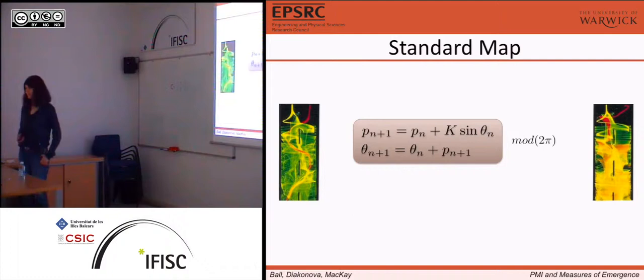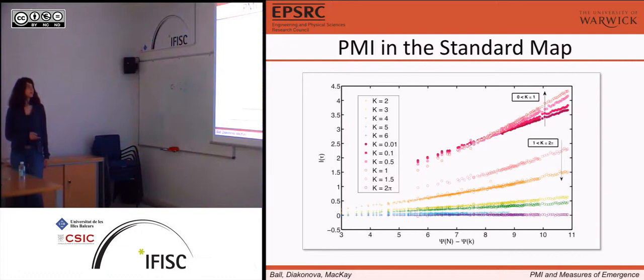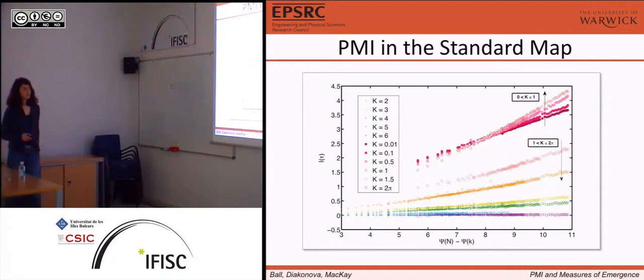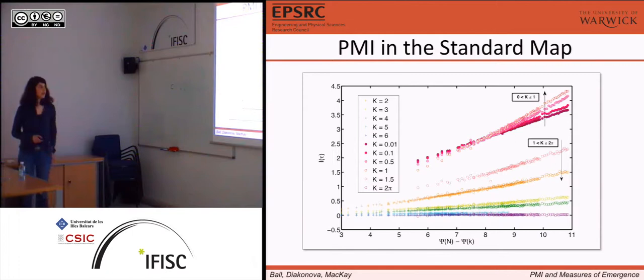So let's see what happens when we start with a flat initial distribution of the state space, and we go to a distribution. What is the mutual information between the past and the future distributions? What we see is something like this: unlike the logistic map, we see here a clear resolution dependency. This axis can be thought of as probability resolution, and this is PMI. Different curves correspond to different non-linearity values.